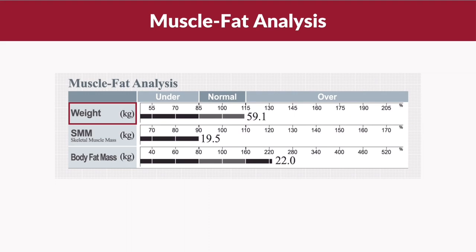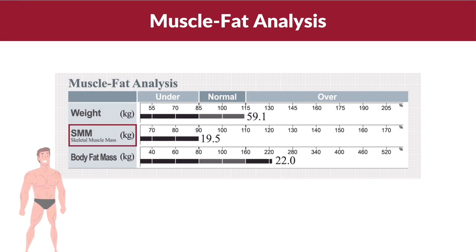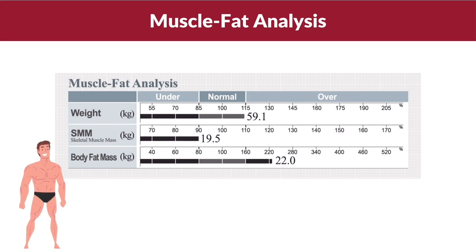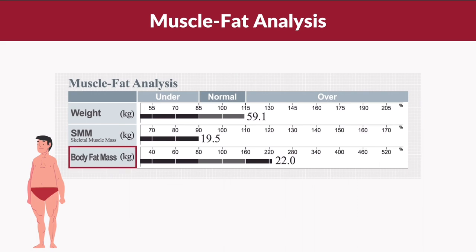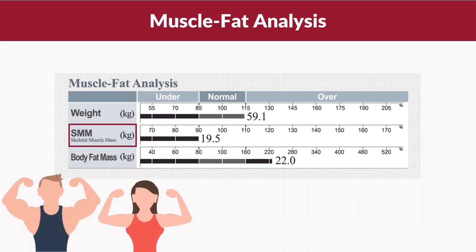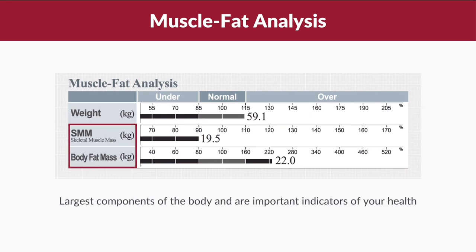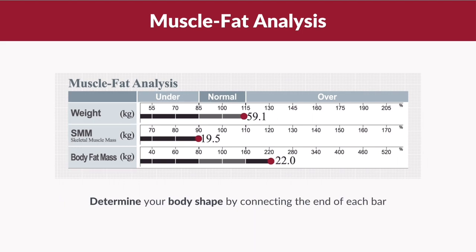Now let's take a look at the muscle fat analysis. The muscle fat analysis breaks down your weight into kilograms of skeletal muscle mass and body fat mass. Skeletal muscle is the muscle attached to the bones and is the muscle that you can work out at the gym. Both body fat mass and skeletal muscle mass are the largest components of the body and are important indicators of your health.